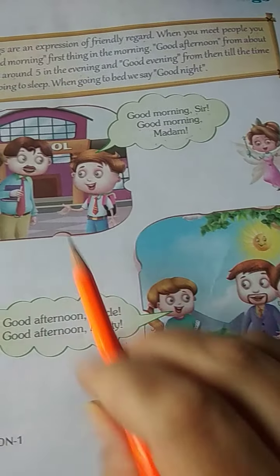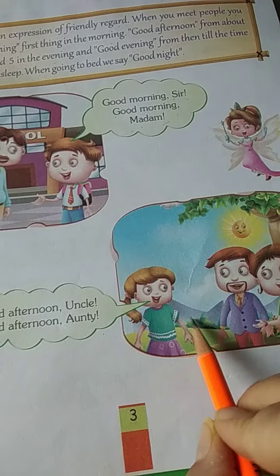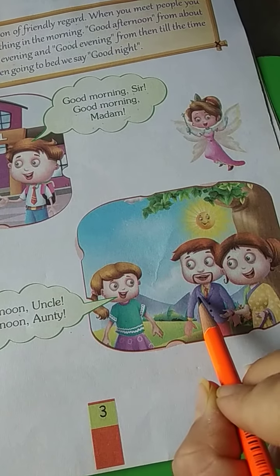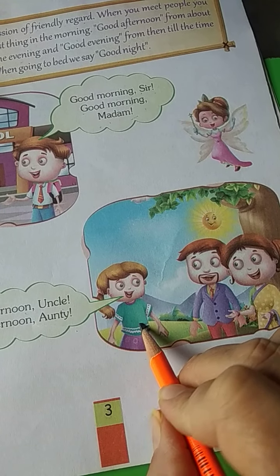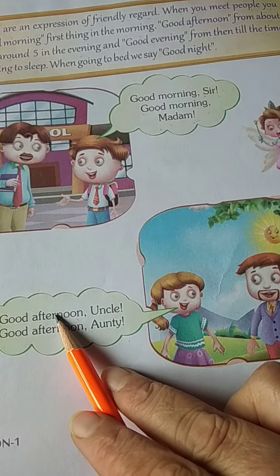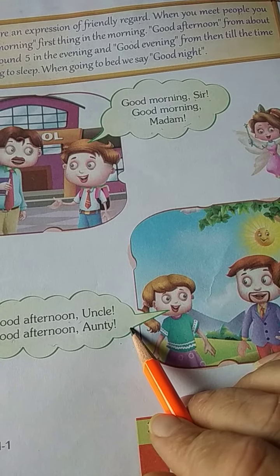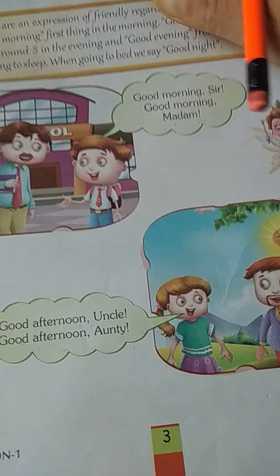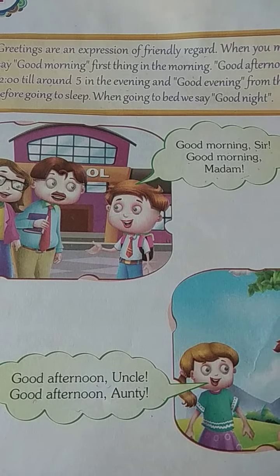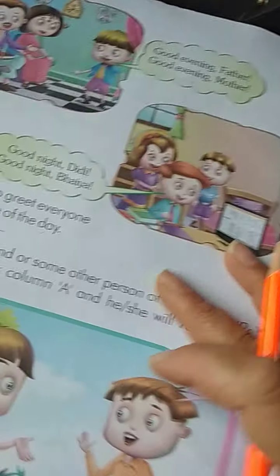अब ये morning का time था, अब ये afternoon time है। इस picture में afternoon time है। एक girl है, उसको uncle और auntie मिले हैं। तो वो क्या विश कर रही है? Good afternoon, uncle. Good afternoon, auntie. जब दुपहर का time होता तो आप क्या बोलते हो? Good afternoon.